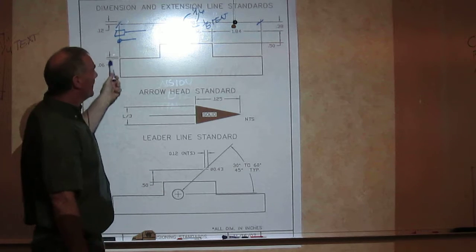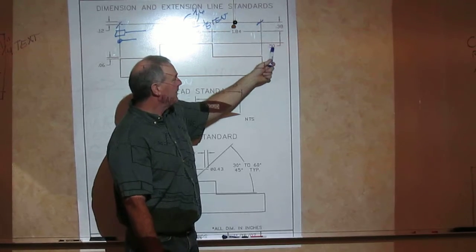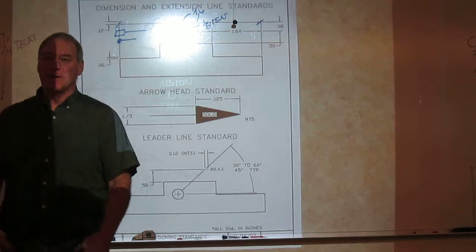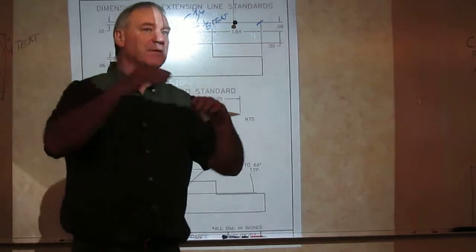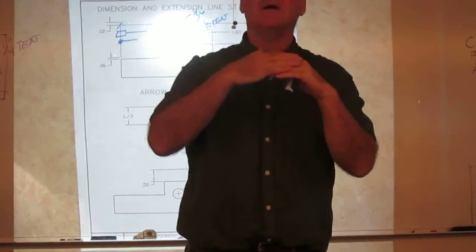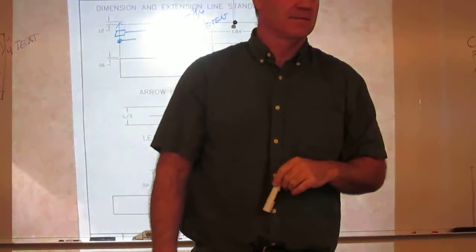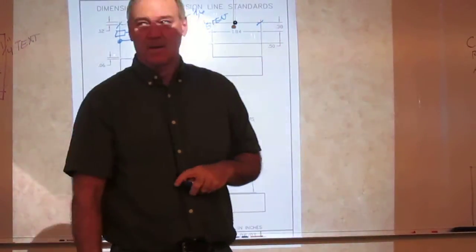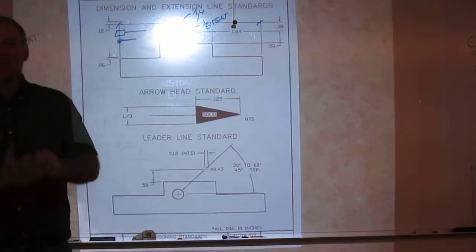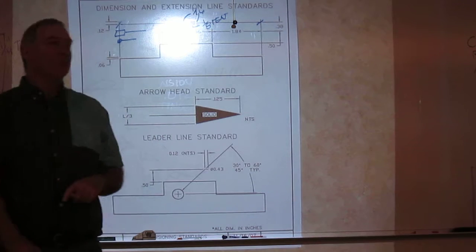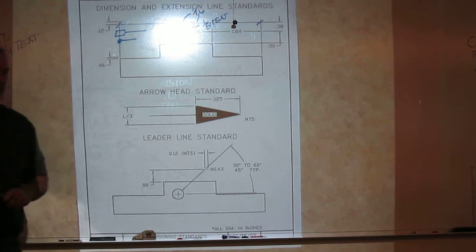I'm putting some dimensions on here for your standards. The first dimension line will be a half inch off the object. So when you finish your multi-views, when you say, I'm going to put a dimension here, measure a half inch off, and that is where the dimension line goes.